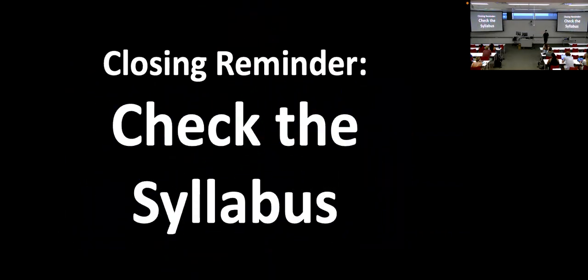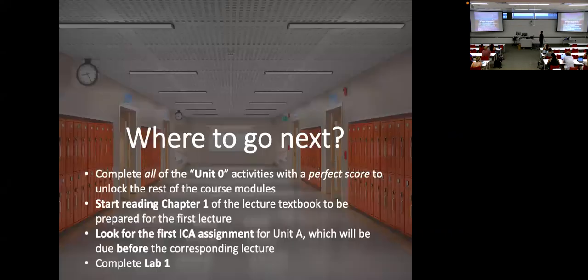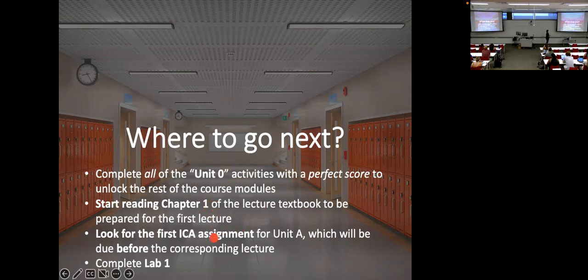Check the syllabus — a lot of details are there. Remember there are two syllabus quizzes: Lab Zero and Lecture Zero. You've got to do those before it unlocks the rest of the class, and you need a perfect score — you can take them as many times as needed. Start reading Chapter 1. Look for the first ICA assignment for Unit A, which is due before Thursday's lecture. There's also Lab 1 on Wednesday, with the lab report due the Sunday after. I'm going to try to release as many homeworks as I can as soon as possible — all the labs and ICAs are already out there.